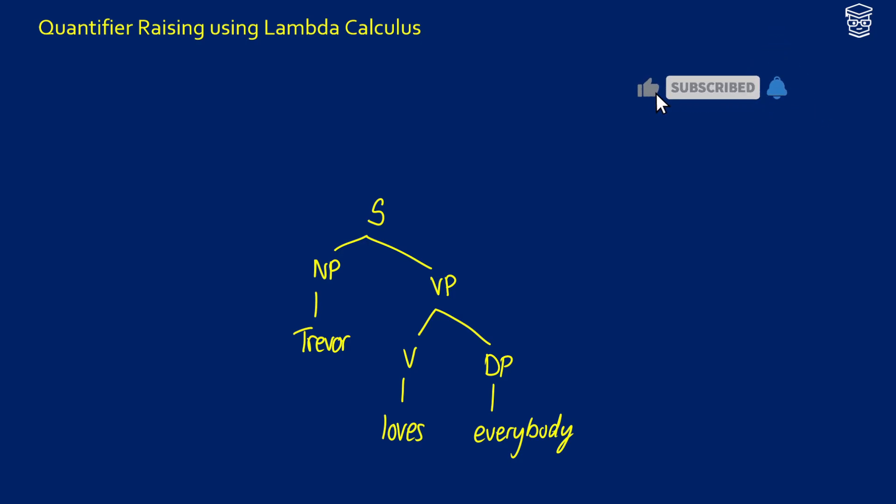When we want to evaluate the sentence, we have to take our DP and create a new node. We'd be going up from the S and in the old system doing a new S.